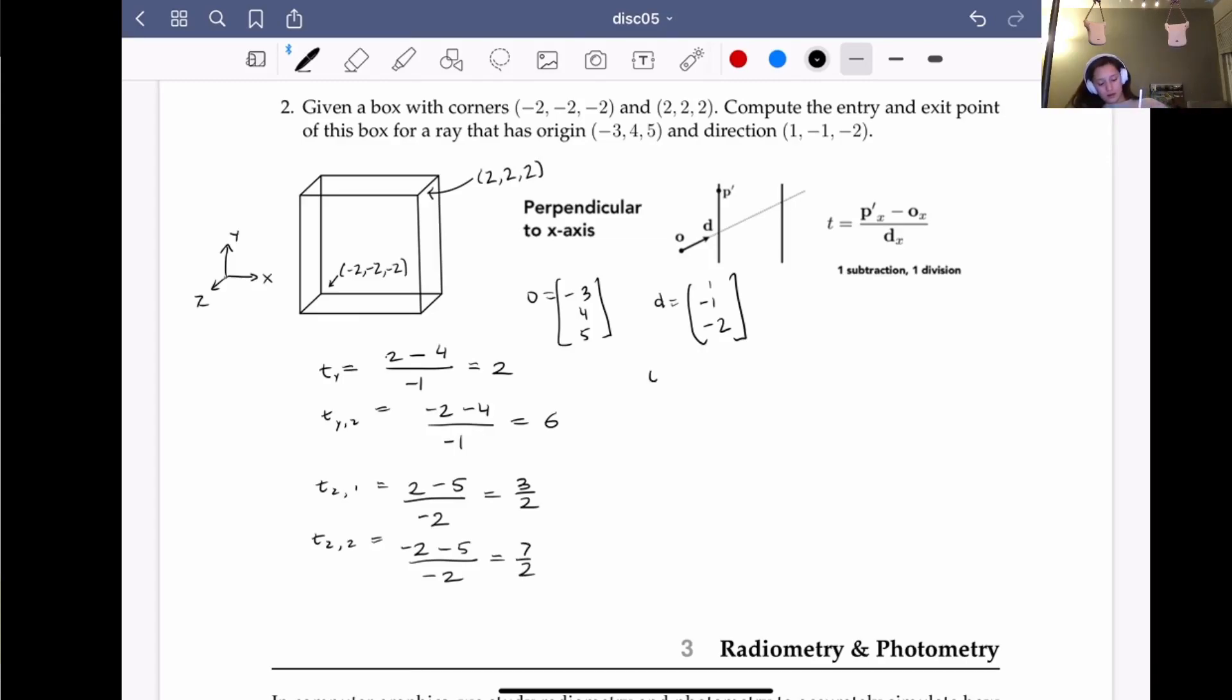And then lastly, with x, we're going to have 2 minus negative 3, so that's plus 3, divided by 1, which is 5. And then tx2 equals negative 2 plus 3 divided by 1, which is just 1.